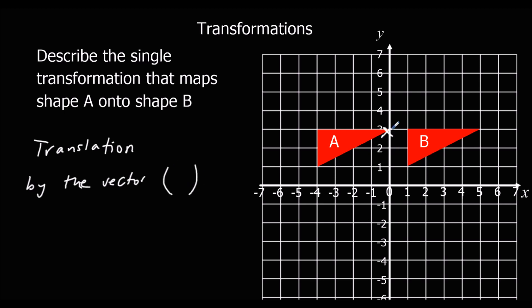So again, we'll do top right to top right. It's gone 1, 2, 3, 4, 5 right. So that's 5. And it hasn't moved up or down. So it's a 0. So it's a translation by the vector 5, 0.